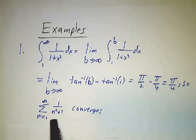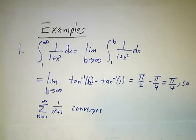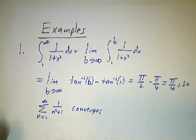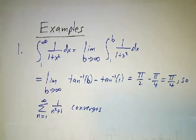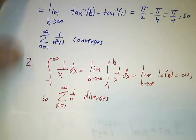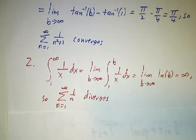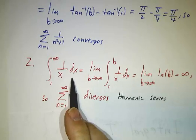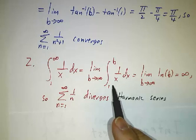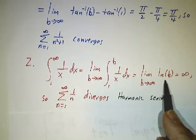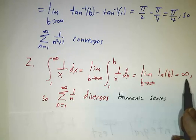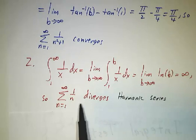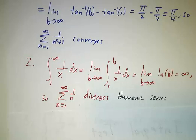That doesn't say the sum equals π/4 — it just says the sum converges to some number, in fact slightly higher than π/4. We'll see later the relation between the value of the sum and the value of the integral. Next example: the harmonic series, 1 + 1/2 + 1/3 + 1/4 + 1/5 + .... The integral of 1/x is the natural log, and the natural log of b goes to infinity as b grows, so the integral diverges — and therefore the harmonic series diverges, though it does so very, very slowly.